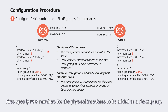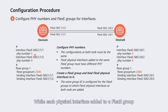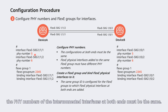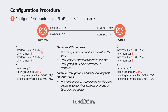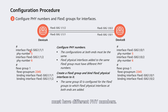First, specify PHI numbers for the physical interfaces to be added to a flexi group. The numbers are used to identify the physical interfaces. Each physical interface added to a flexi group must be configured with a PHI number, and the PHI numbers of the interconnected interfaces at both ends must be the same. In addition, flexi physical interfaces added to the same flexi group must have different PHI numbers.